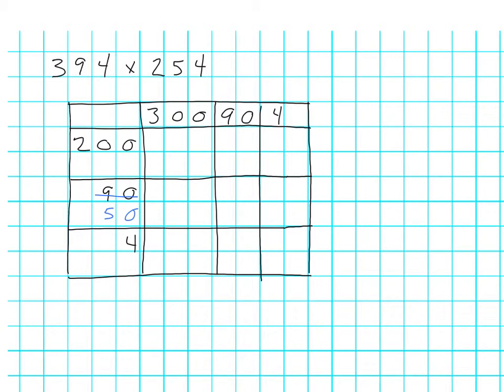So we have 200 multiplied by 300 is going to be 60,000, and 50 times 300 is going to be 15,000, and 4 times 300 is going to be 1,200. 200 times 90 is going to be 18,000.